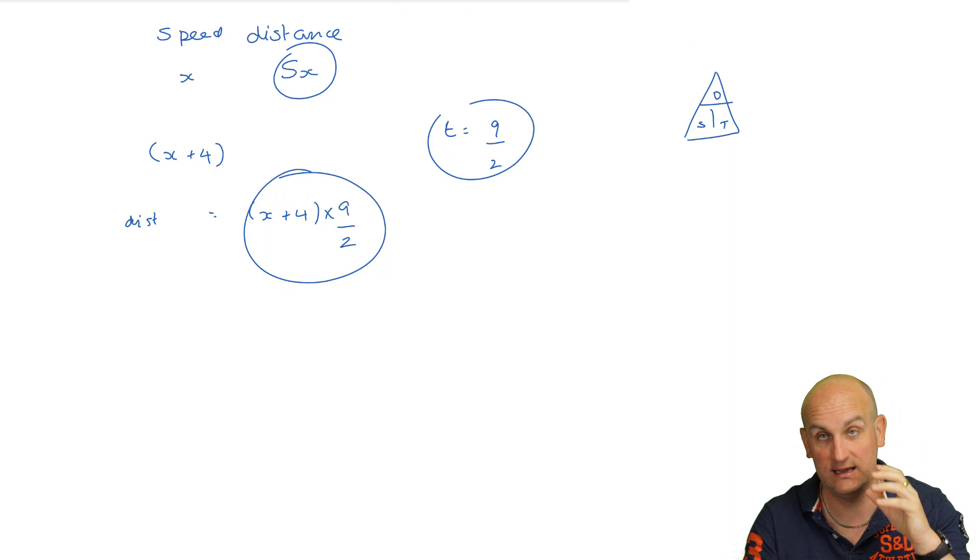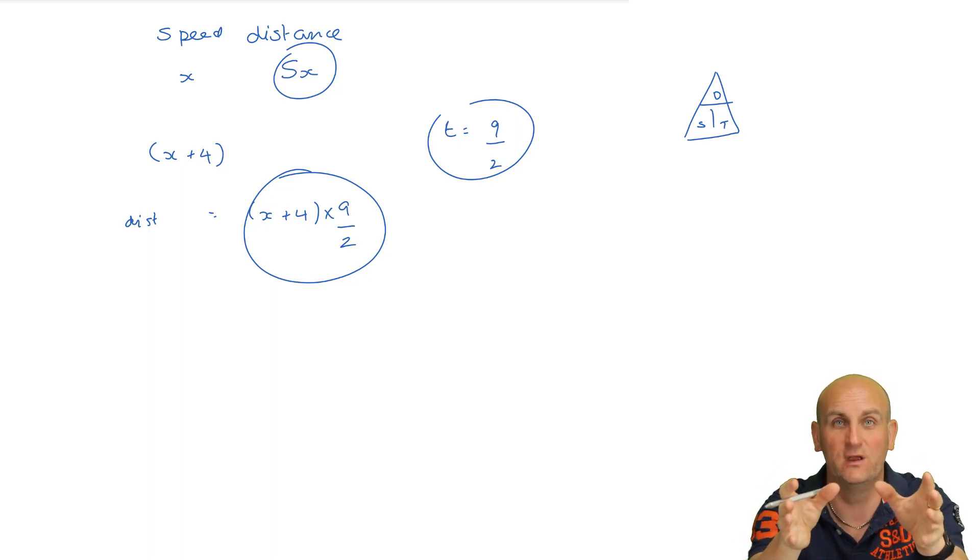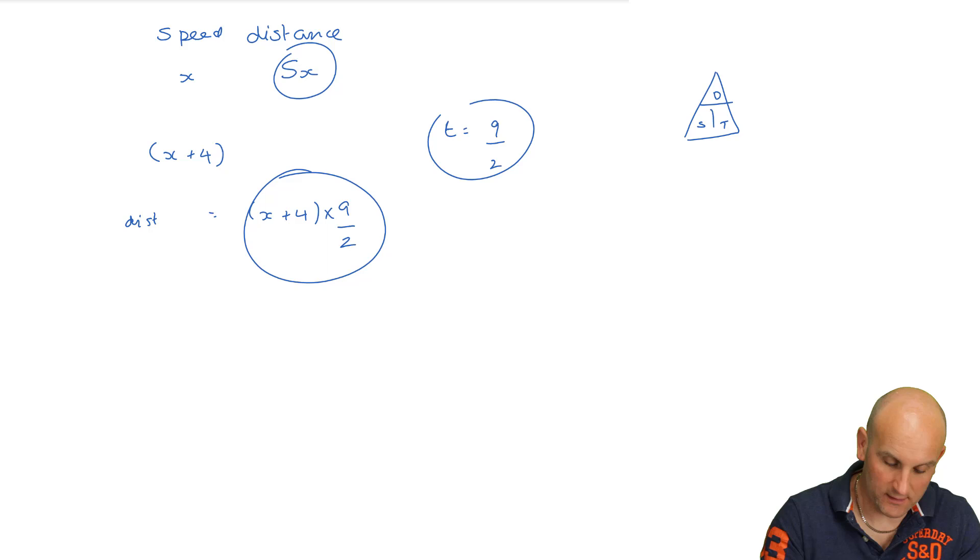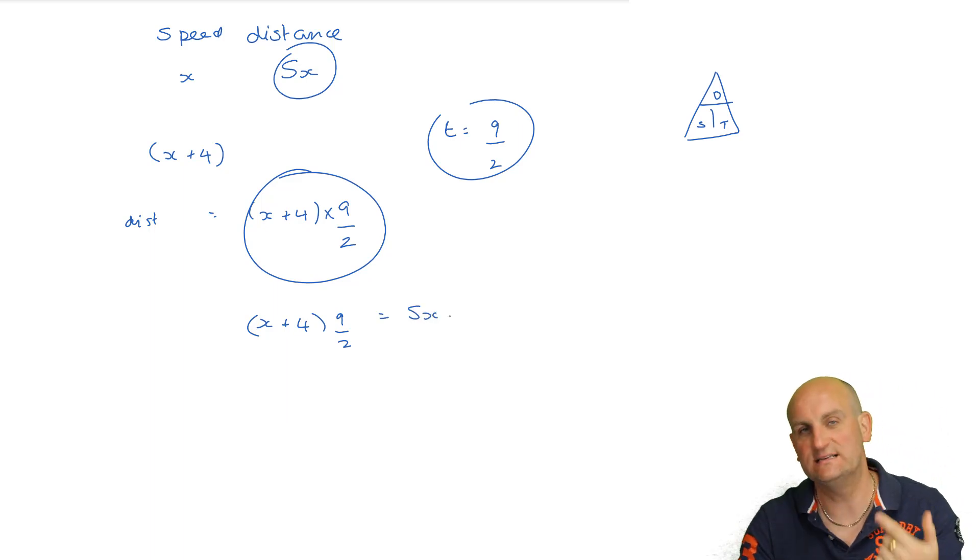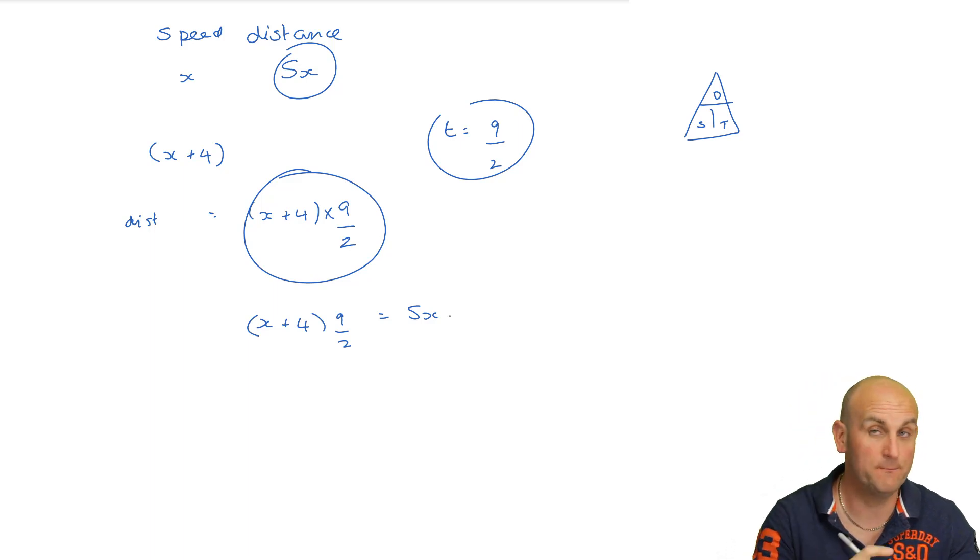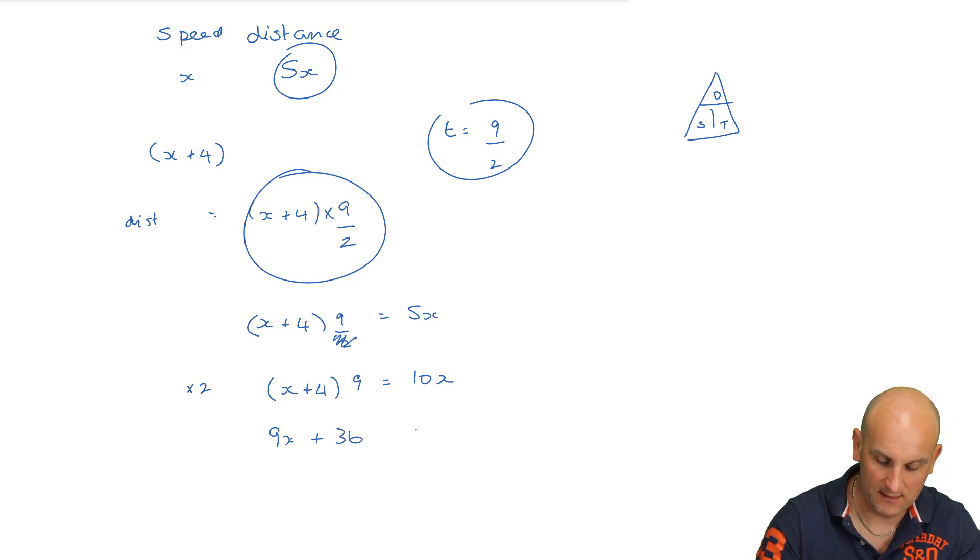Extracting that information was probably harder than I would have given. But it doesn't just rely on your maths. Now it's relying on a bit of physics. Maths isn't just a box that you put things into for each chapter. You have to keep remembering this stuff. So let's equate those. We get X plus 4 multiplied by 9 over 2 equals 5X. I see a fraction. I don't like that fraction. I'm going to multiply everything by 2. Multiplying everything by 2 gives me X plus 4 times 9 equals 10X.